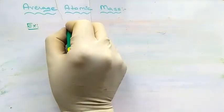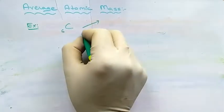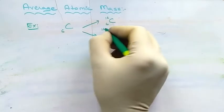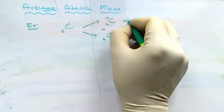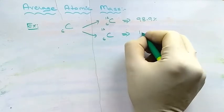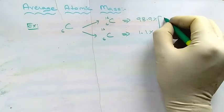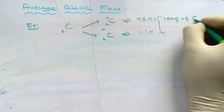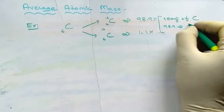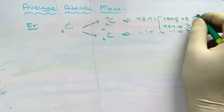Next, we are going to calculate the average atomic mass for carbon. Carbon also has two isotopes in nature — carbon-12 and carbon-13. Carbon-12 is abundant in nature at 98.9% and carbon-13 at 1.1%. This means in 100 grams of carbon, 98.9 grams of carbon-12 and 1.1 grams of carbon-13 will be present.